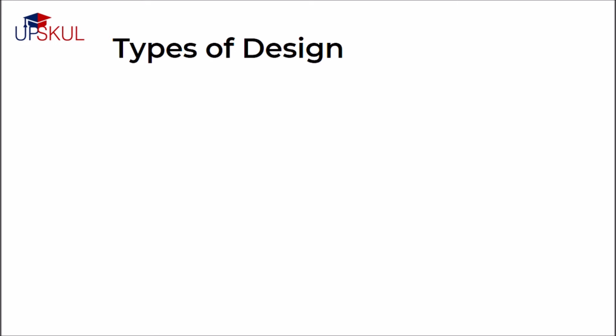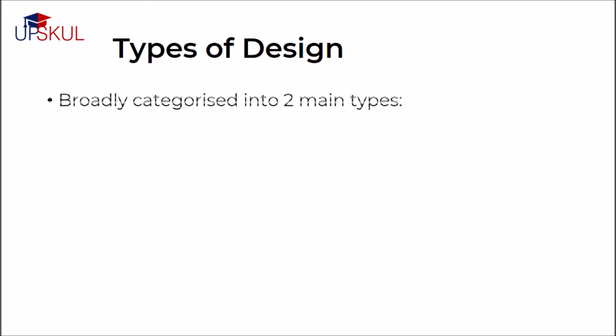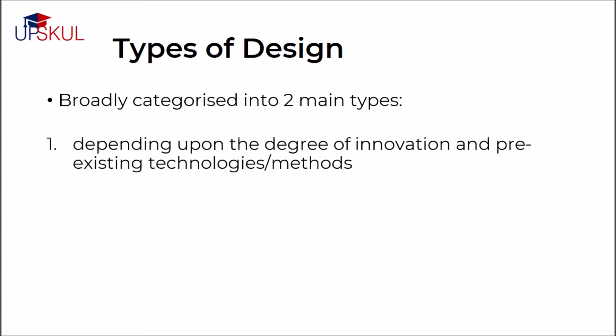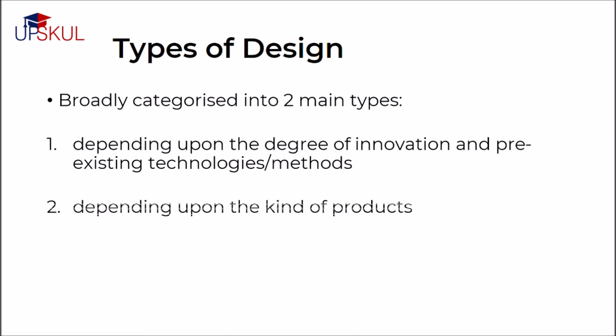Product design can be broadly categorized in two ways. The first category depends upon the degree of innovation and level of existing knowledge, and the second category depends upon the kind of products. Let us now see the six different types of product design depending upon innovation.